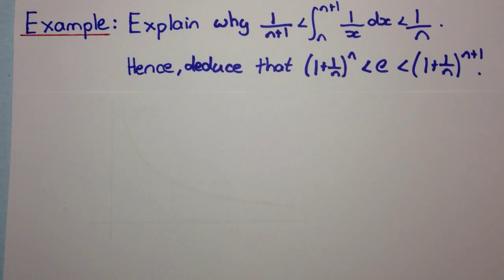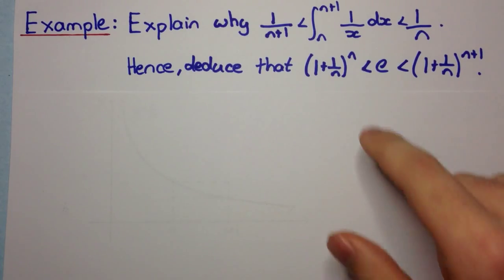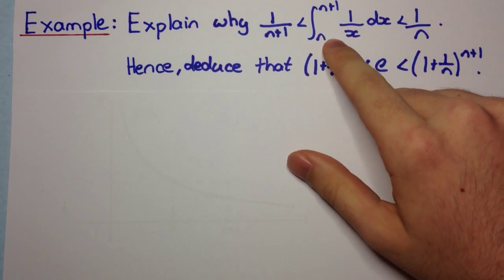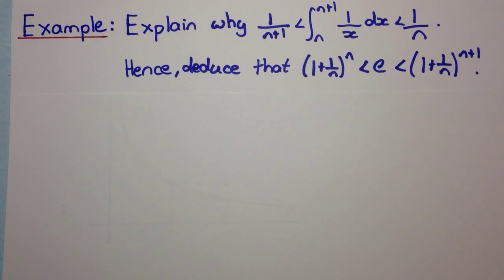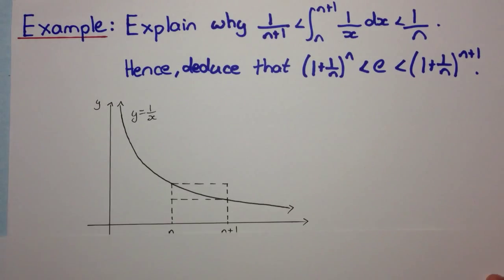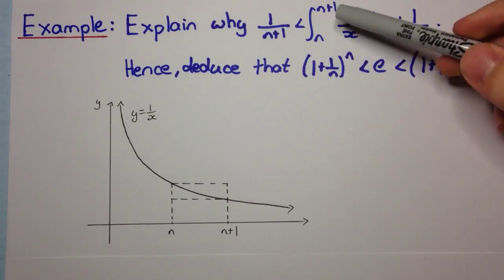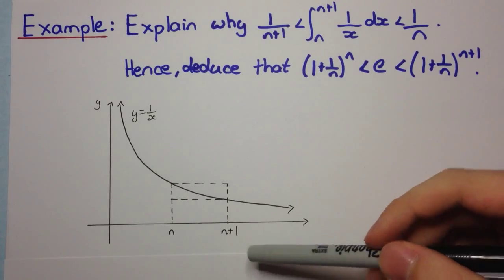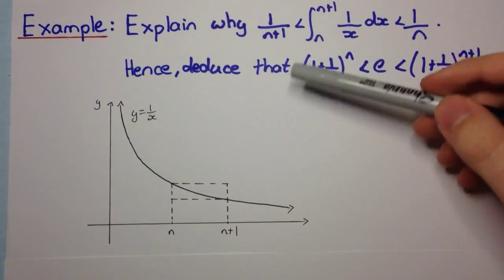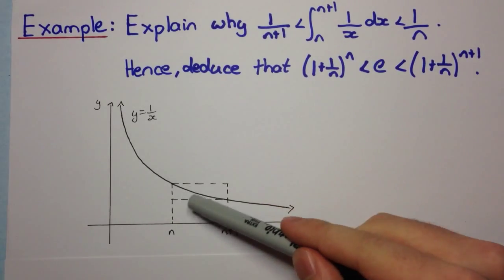The first thing you should notice is that the first part asks you to find bounds for this integral. When you're trying to find bounds for an integral, one thing to consider is the area that the integral actually represents. I've drawn a little diagram here — the integral of 1 over x is a hyperbola, and this integral represents the area under the curve between these two points.